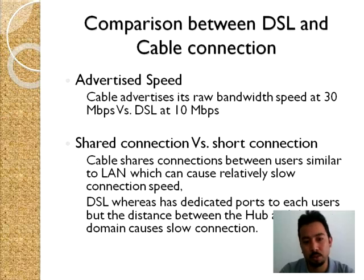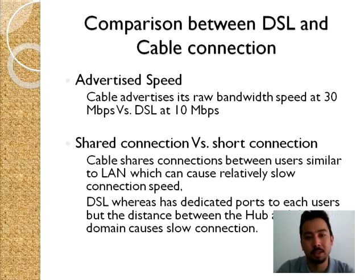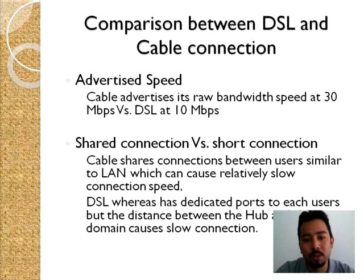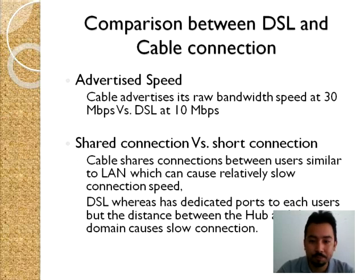Another factor is shared connection versus dedicated connection. Cable uses a shared connection, similar to a LAN or local area network, so during high traffic hours the internet can be painfully slow, while at times of fewer users the connection is relatively faster. DSL does not encounter such problems because each user has a separate dedicated line from the modem to the DSLAM. However, DSL's fault is its distance-sensitive technology — the farther the user is from the main hub, the slower the connection.